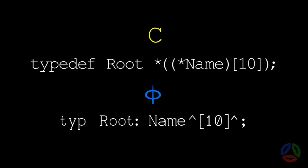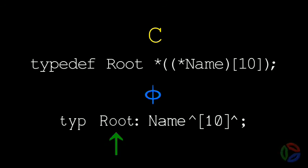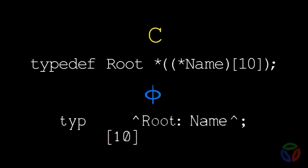Let's now look at an example of a type definition in Phi and compare it to its equivalent declaration in C. Looking at the Phi example, we read: define a type name to be a pointer to an array of count 10 of pointers to root. Notice that the root type is declared up front even though logically it should appear at the end. The reason for this is so you don't have to wade through a lot of code in order to find out what the root type is. Declarations in all of these forms are equivalent.